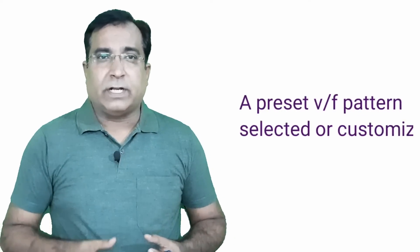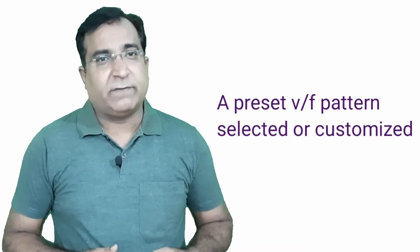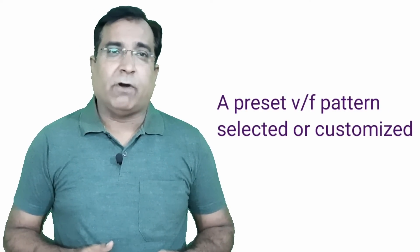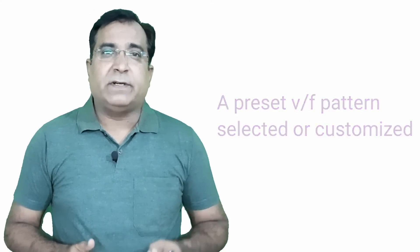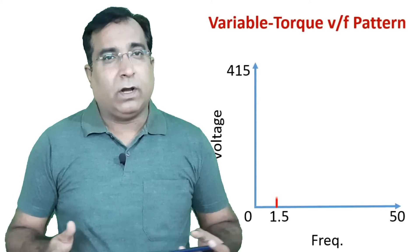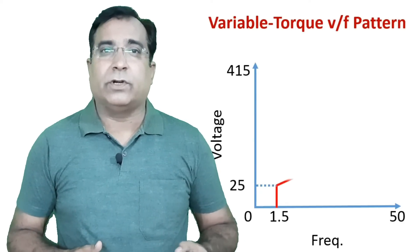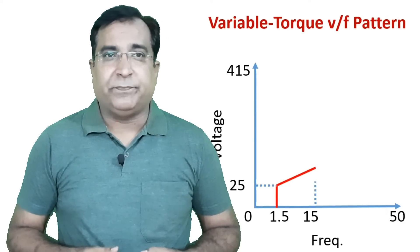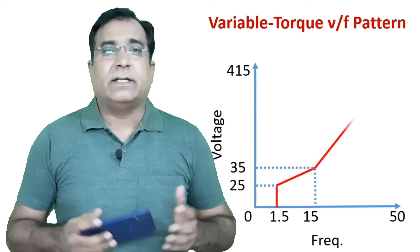There you will have to select the variable torque pattern or you can also customize V by F pattern as per your application requirement or need. This V by F pattern is nothing but a curve of ratio of voltage and frequency which follows a particular motor. The V by F pattern indicates how much voltage across the motor or torque required at a particular frequency. You can also select the preset and customize it.